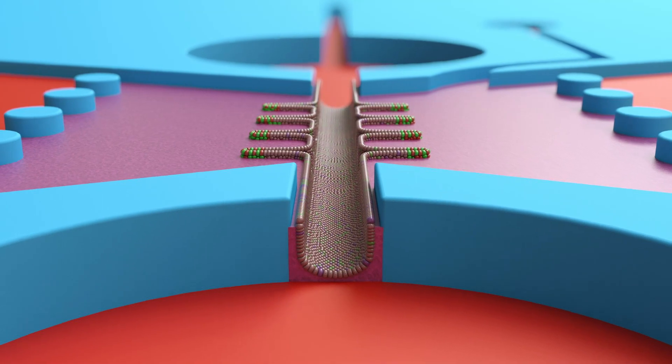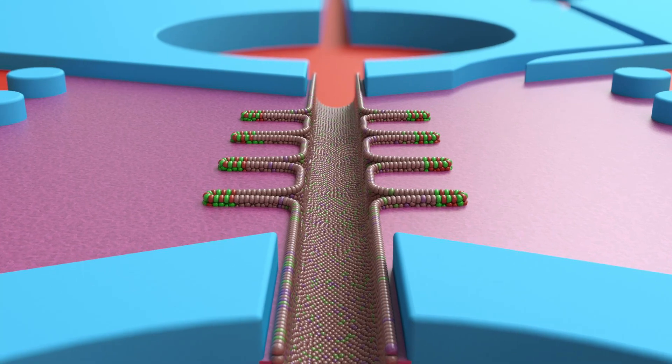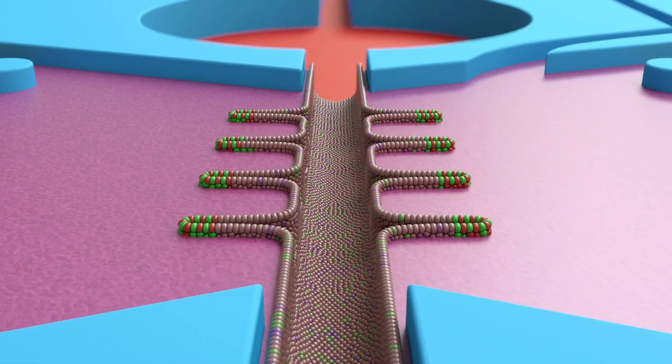The microfluidic chip is engineered to incorporate a gut-shaped micro channel within the 3D hydrogel to create the right environment for the cells.